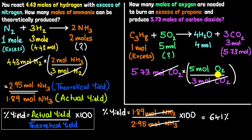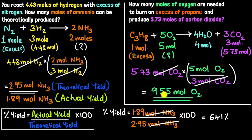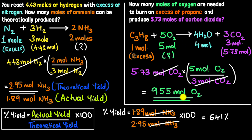Since this gives me moles of oxygen, I put the numbers in the calculator: 5.73 times 5 divided by 3, giving about 9.55 moles of oxygen. We can do a sense check: if 5 moles of oxygen produce 3 moles of carbon dioxide, and we achieved slightly less than double that — slightly less than 6 moles of CO₂ — then we must have used slightly less than double the oxygen, slightly less than 10. And that's exactly what we get, confirming the ratios stay the same.